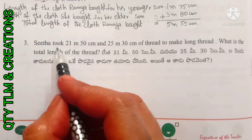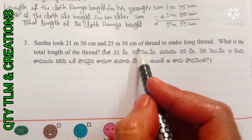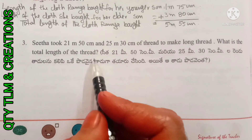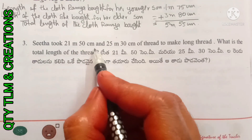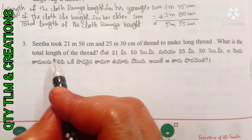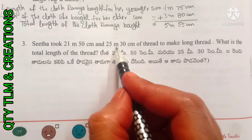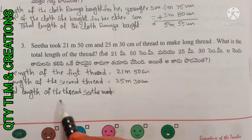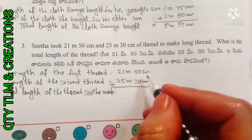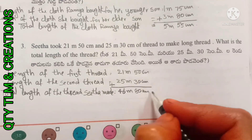Next question: Sita took 21 meter 50 centimeter and 25 meter 30 centimeter of thread to make a long thread. What is the total length of the thread? Length of the first thread equals 21m 50cm. Length of the second thread equals 25m 30cm. Total length of the thread Sita made equals 46 meters 80 centimeters.